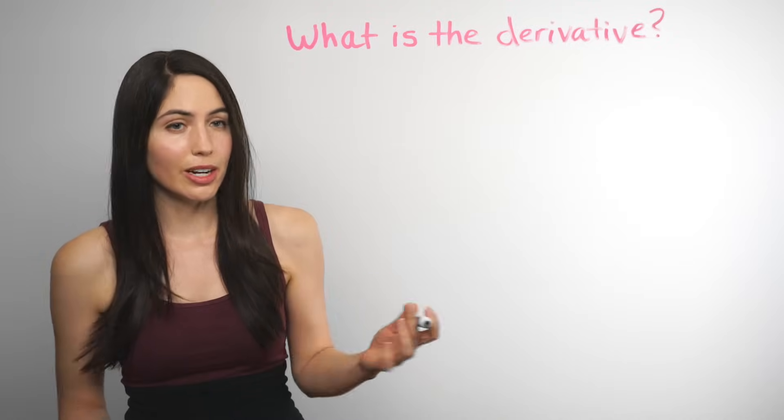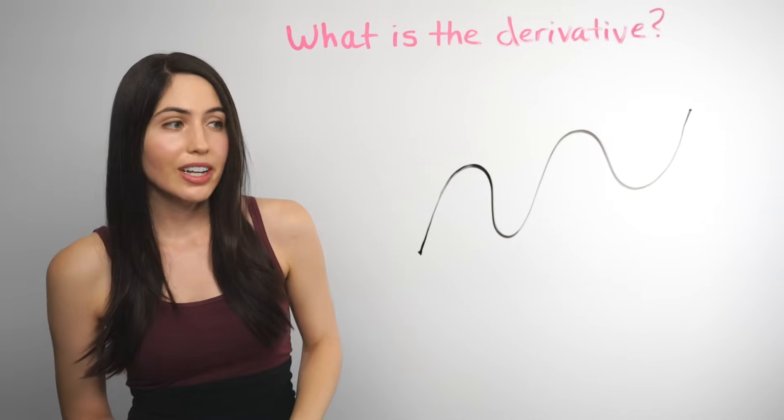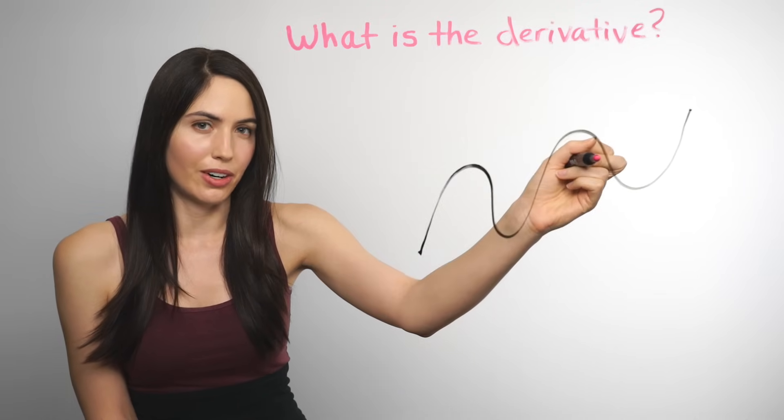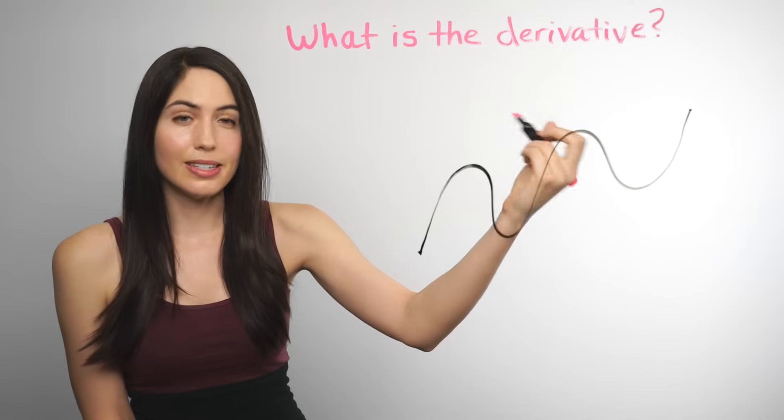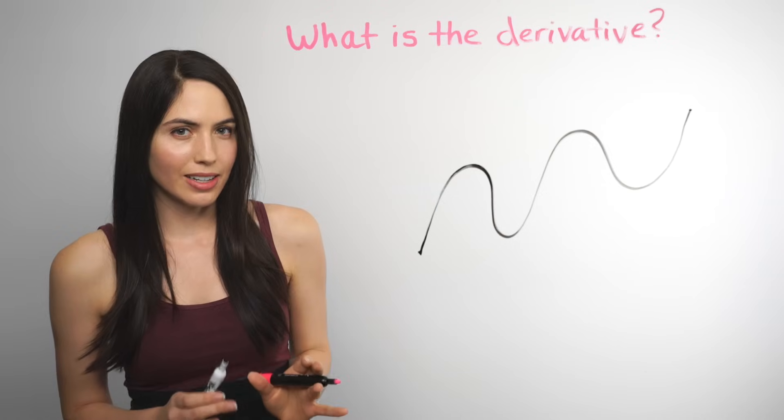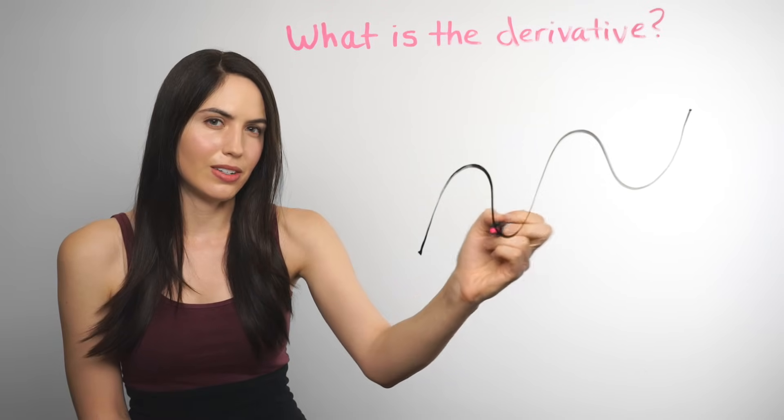But say you have a curve, a random curve, the derivative tells you the slope at any point on your curve. The steepness or rise over run, the slope. But really what it's telling you is the slope of the line tangent to the curve.